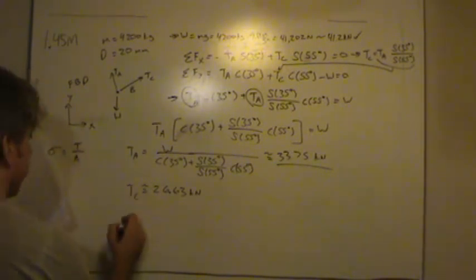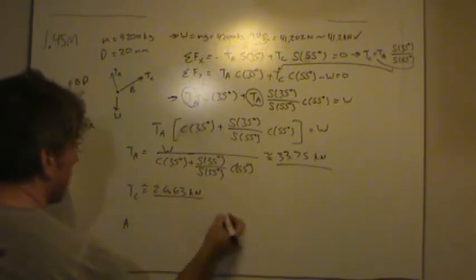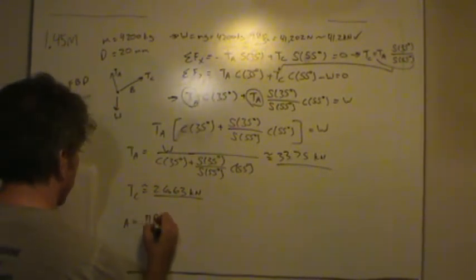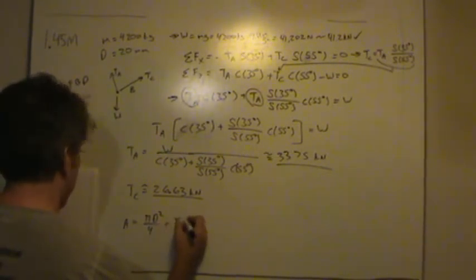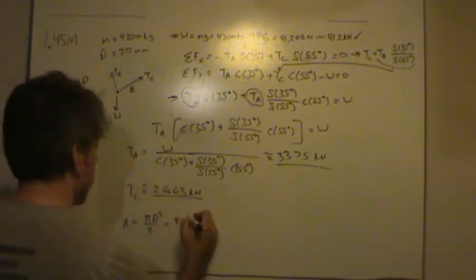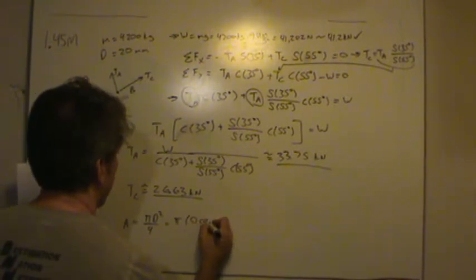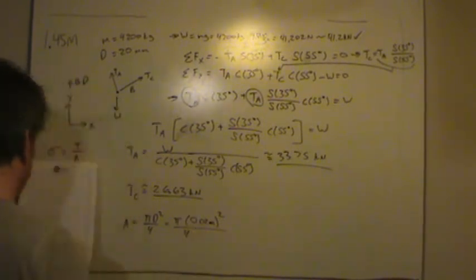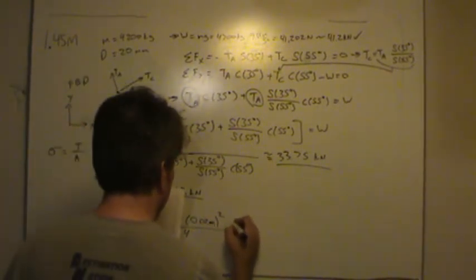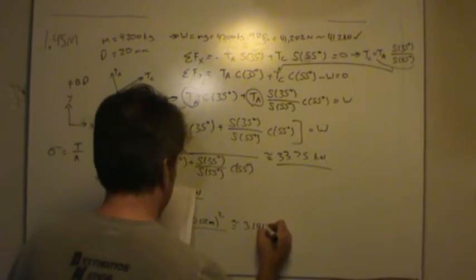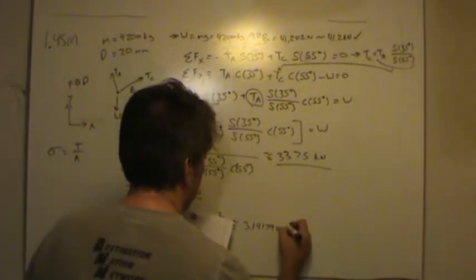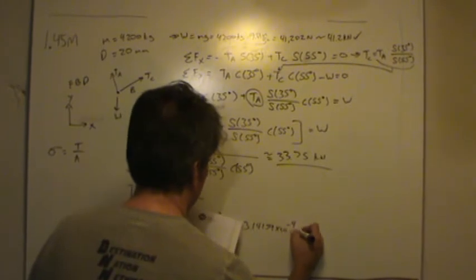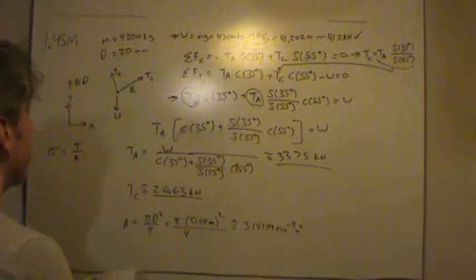So let's go ahead and calculate the area over here. By the way, this is another number we need. The area would be just pi d squared by 4. Of course, that's pi times, now, 20 millimeters is the same thing as 0.02 meters. Has to be squared over 4. And that number is about 3.14159, which is just pi, by the way, times 10 to the negative 4th meters squared. So there's the area.